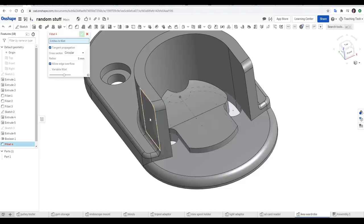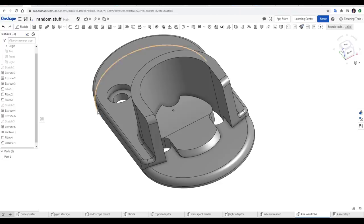Afterwards, you simply do a boolean union to join the parts back together, before some more chamfers and fillets to get it looking like the real life part.